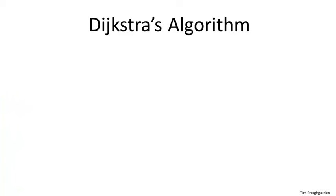Let's move on to the pseudocode for Dijkstra's shortest path algorithm. This is one of those algorithms that's always super fun to teach, because it exposes the beauty in good algorithm design. The pseudocode is very elegant: we have just one loop, and in each iteration we compute the shortest path distance to one additional vertex. By the end of the loop, we'll have computed shortest path distances to everybody. With a suitable application of the heap data structure, we can implement Dijkstra's algorithm to run almost in linear time — namely M times log N.